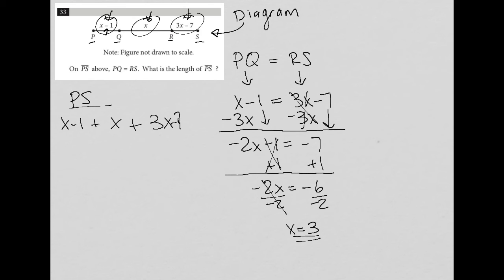So all together, that's X plus X plus 3X. That's all together. I have 5X. And then negative 1 and negative 7. So that's minus 8. So 5X minus 8.